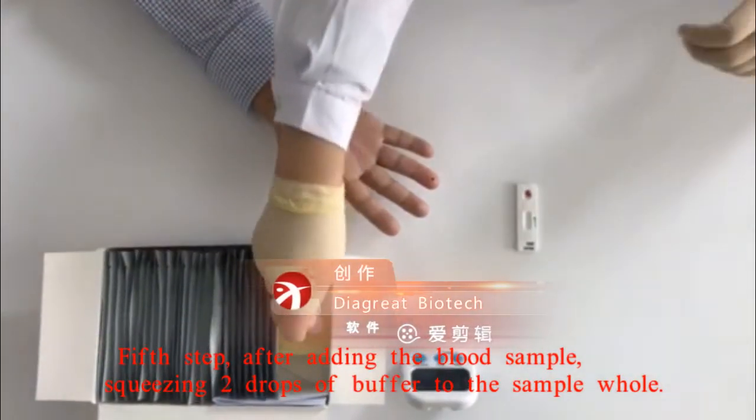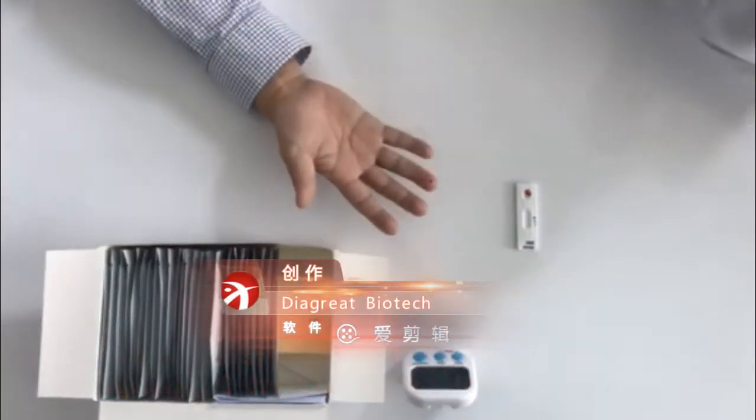Fifth step, after adding the blood sample, squeeze 2 drops of buffer to the sample hole.